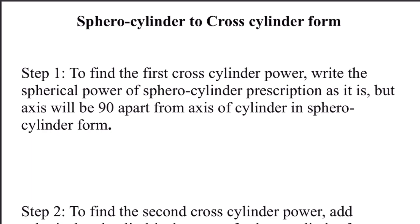Welcome to my channel. In this video we'll be learning about how you can transpose your sphero-cylinder form to a cross-cylinder form. The cross-cylinder form is another way of writing lens prescription, but it is usually never used to write spectacle lens prescriptions. However, this cross-cylinder form gives you in-depth understanding of the power of each meridian. It divides the sphero-cylinder prescription into two plano-cylinders with their axes 90 degrees apart from one another. It is also one method of calculating gross and net retinoscopy values, and a way of representing keratometry readings.